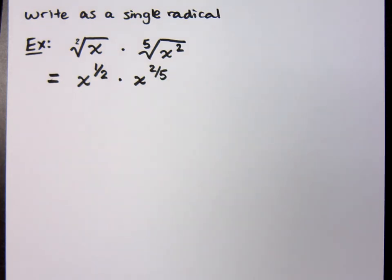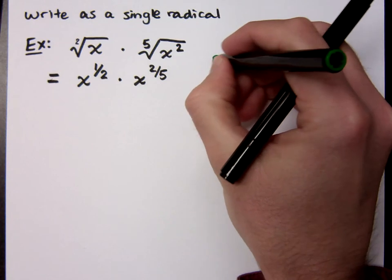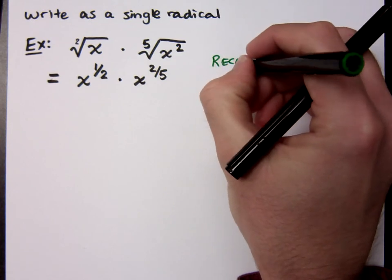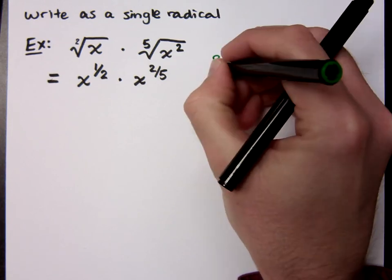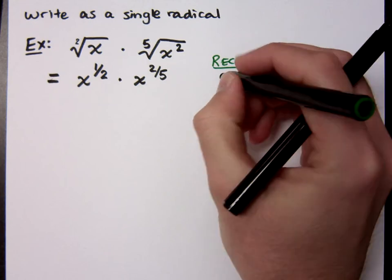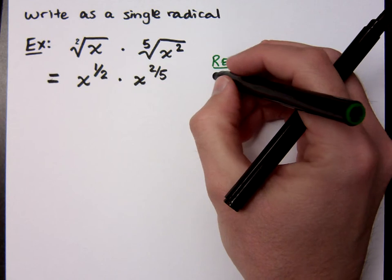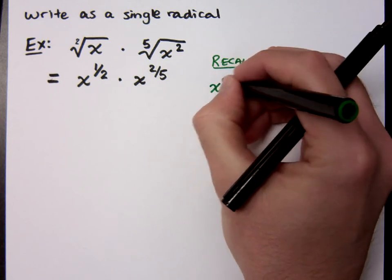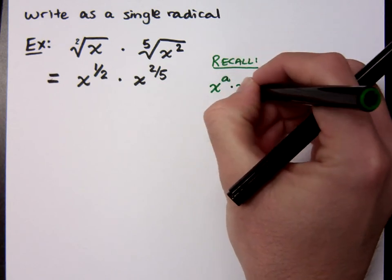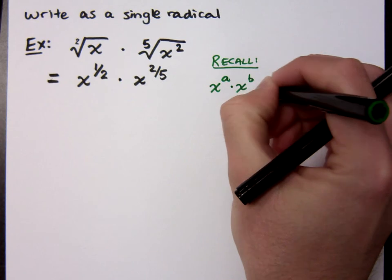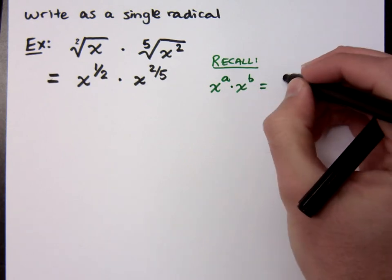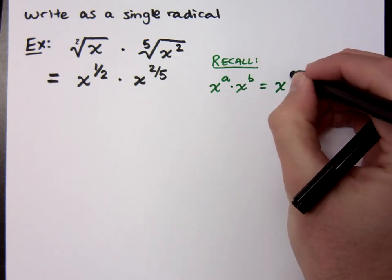Right? It's not new, because that's what we were talking about last time, how we could rewrite things using exponents. Now, in case you guys may have forgotten, I know you guys don't ever forget anything. Hashtag sarcasm. If I have x to the a times x to the b, what do you do when you multiply? I'll add exponents. You add the exponents, right?